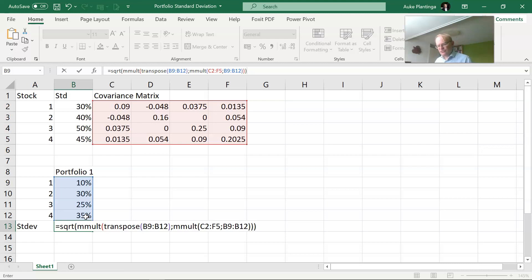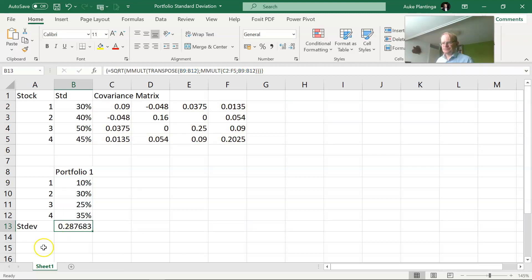As always I conclude the matrix function or an array function in Excel with shift control enter. I change the formatting slightly and you can see that I get a standard deviation of 28.8%. What you also see in this example is the power of diversification. The portfolio has a lower standard deviation than even the lowest single stock in this example.